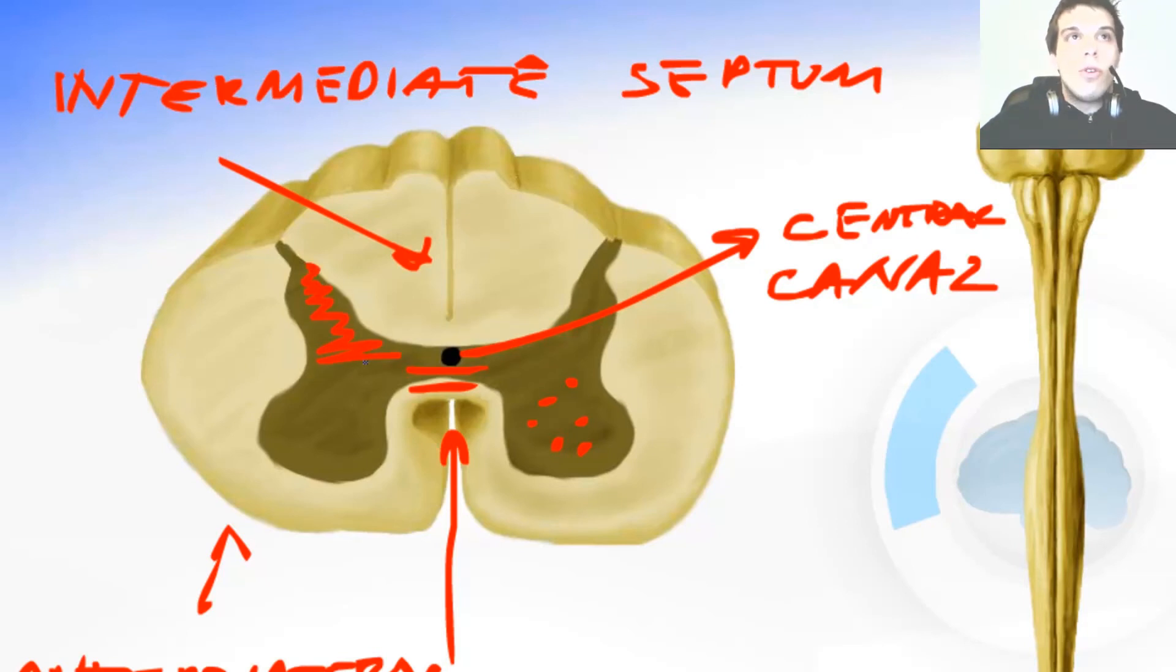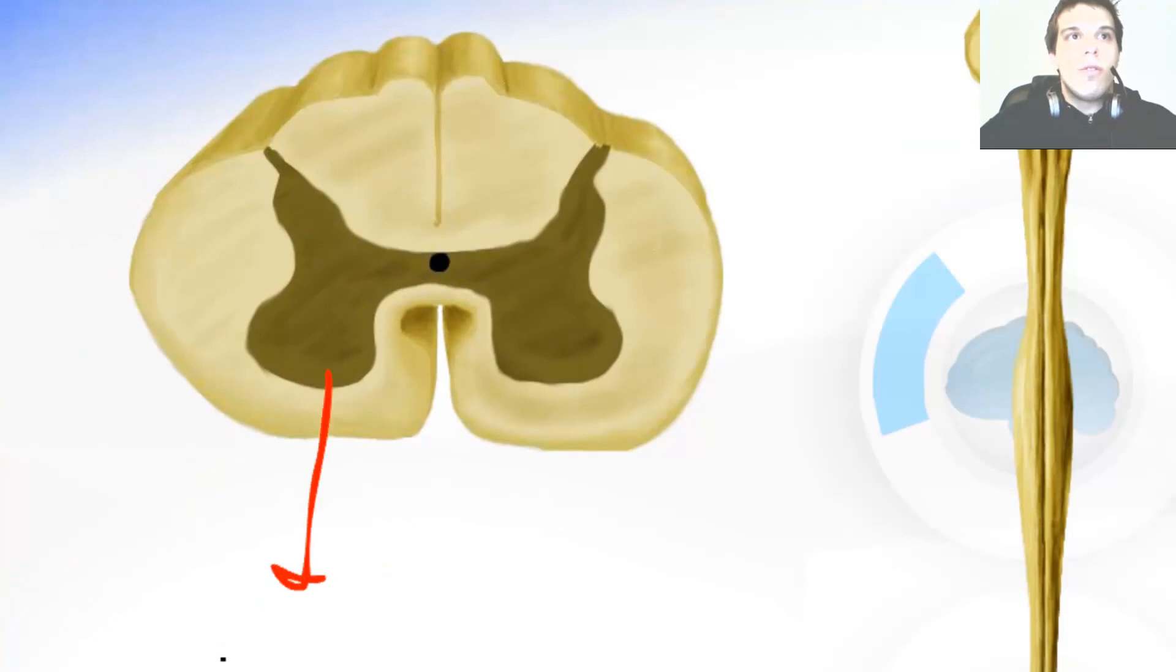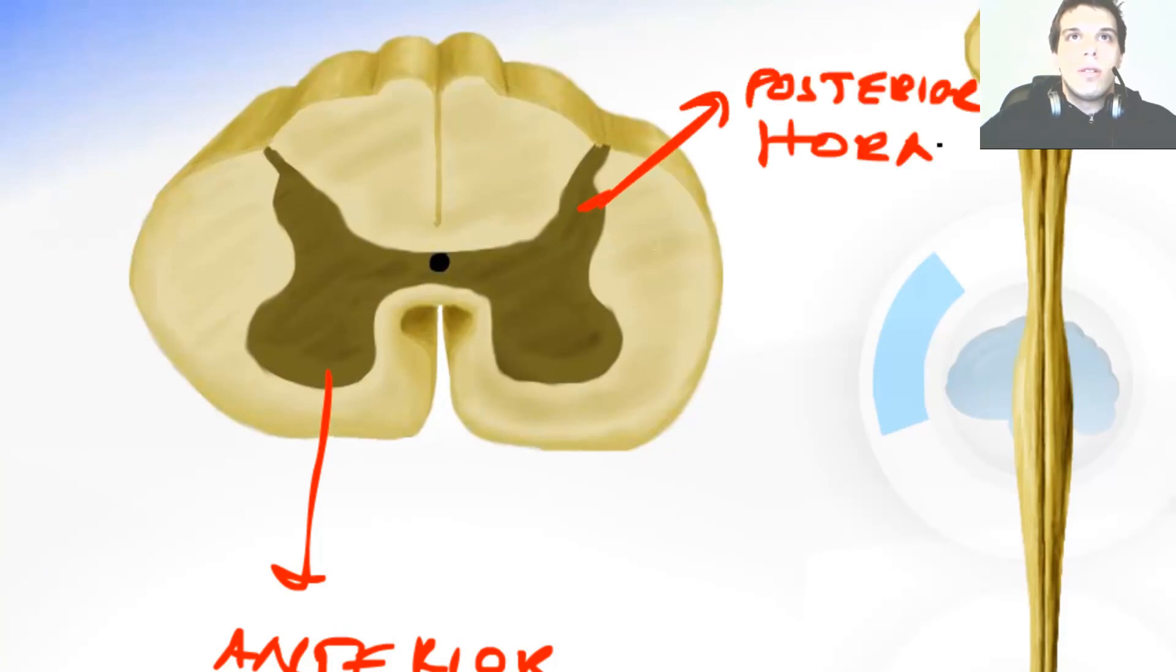This part over here of the spinal cord is the posterior horn of the gray matter. It is the sensible horn. It is called the sensible horn because the posterior sensible roots of the spinal nerve come to the spinal cord through this horn. This part over here is the motor horn or the anterior horn of the spinal cord gray matter. Motor neurons send their axons through the anterolateral sulcus here and they join with the sensible root of the spinal nerve and they create the spinal nerve. I already said that. So we had the anterior horn and we had the posterior horn.